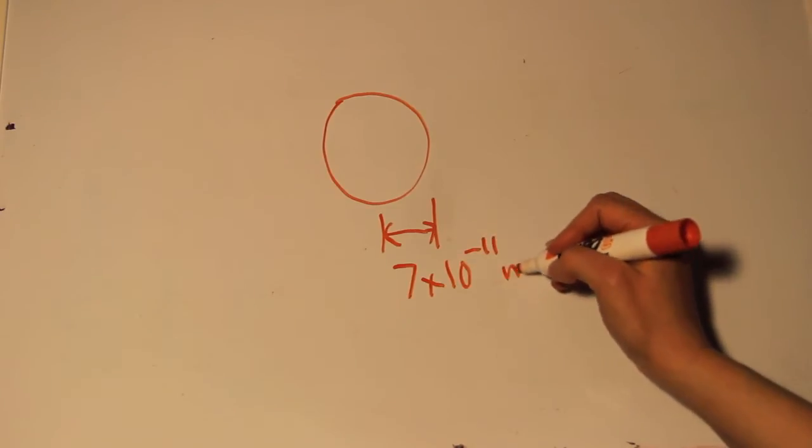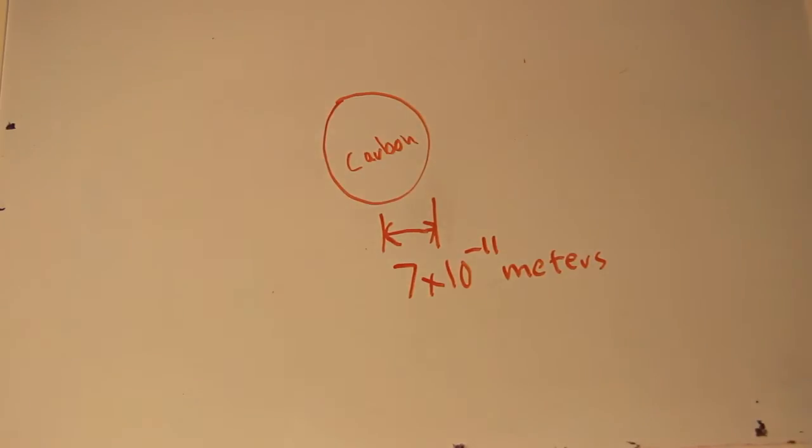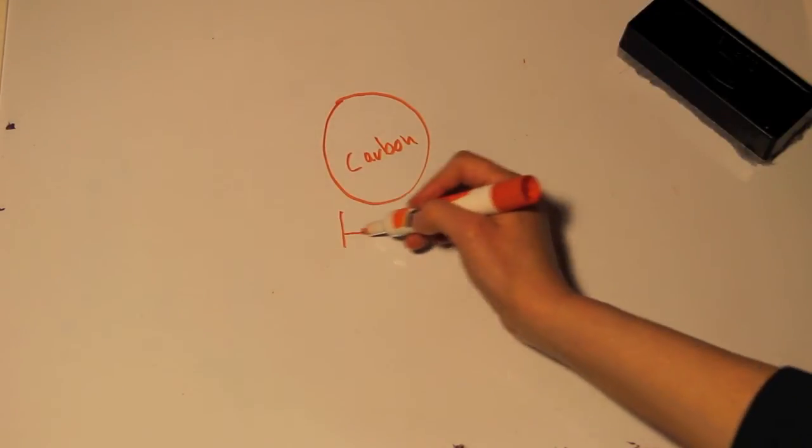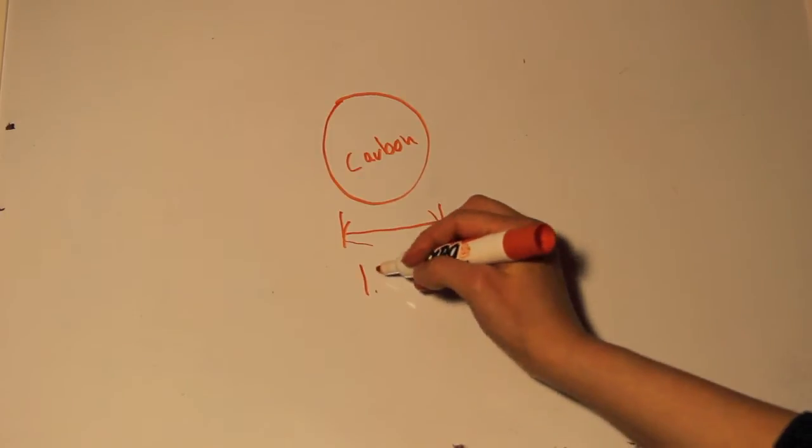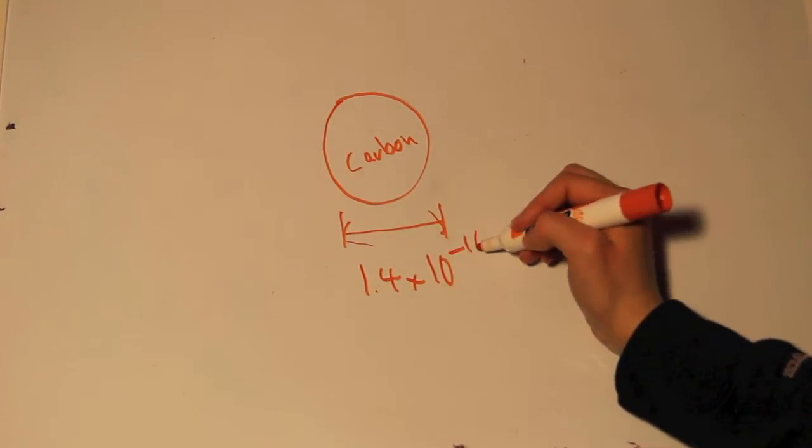Which is a pretty big number. Next we will look at how wide a carbon atom is. Its radius is about 7 times 10 to the negative 11 meters. Doubling this gets us a diameter of 1.4 times 10 to the negative 10 meters.